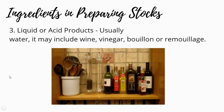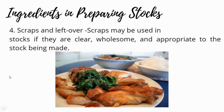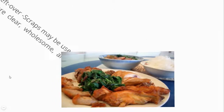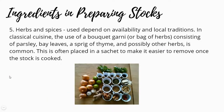3. Liquid or acid products, usually water; it may include wine, vinegar, bouillon, or remoulage. 4. Scraps and leftover scraps may be used in stocks if they are clear, wholesome, and appropriate to the stock being made. 5. Herbs and spices used depend on availability and local traditions. In classical cuisine, the use of a bouquet garni, or bag of herbs, consisting of parsley, bay leaves, a sprig of thyme, and possibly other herbs, is common. This is often placed in a sachet to make it easier to remove once the stock is cooked.